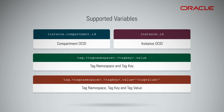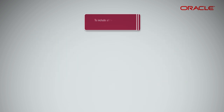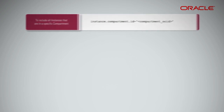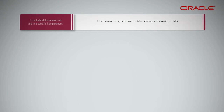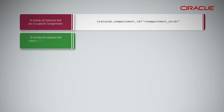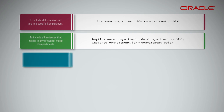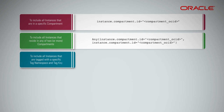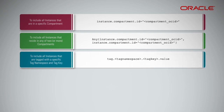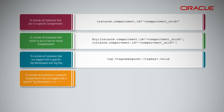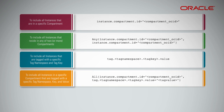Tag.tagnamespace.tagkey.value equals tagValue — the tag namespace, tag key, and tag value. Here are some examples: to include all instances in a specific compartment, add a rule with the following syntax. To include all instances that reside in any of two or more compartments, add a rule with the following syntax. To include all instances tagged with a specific tag namespace and tag key, add a rule with the following syntax. To include all instances in a specific compartment tagged with a specific tag namespace, key, and value, add a rule with the following syntax.